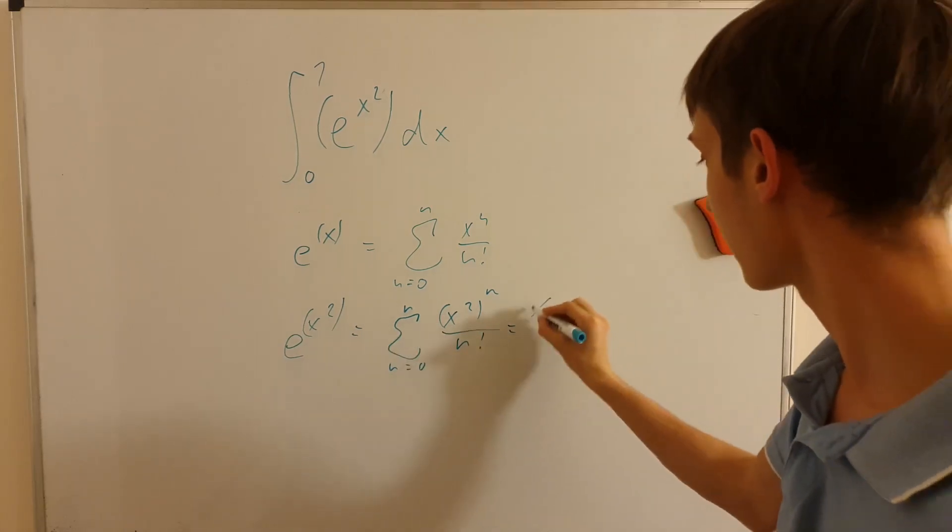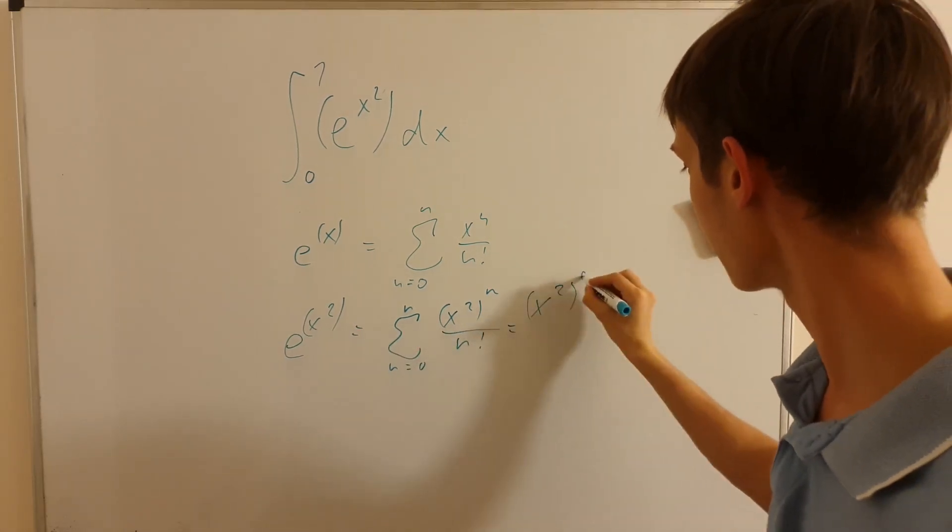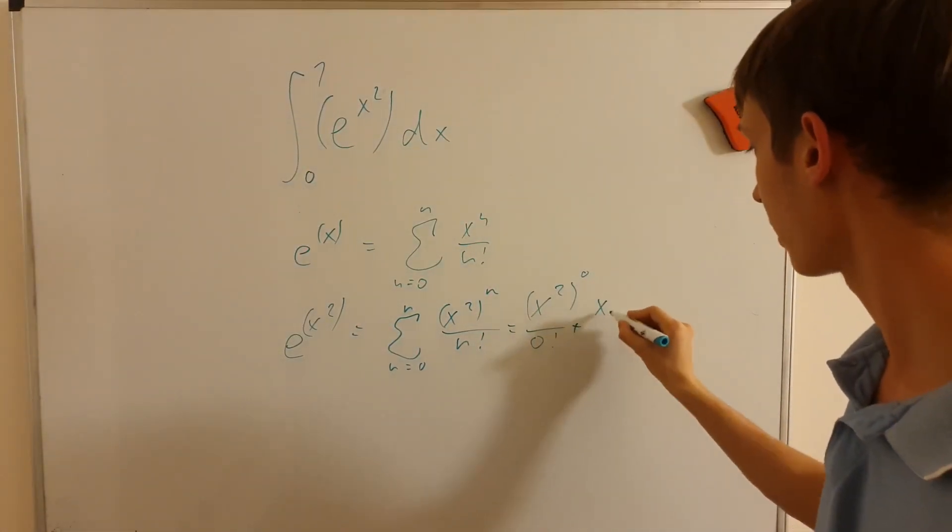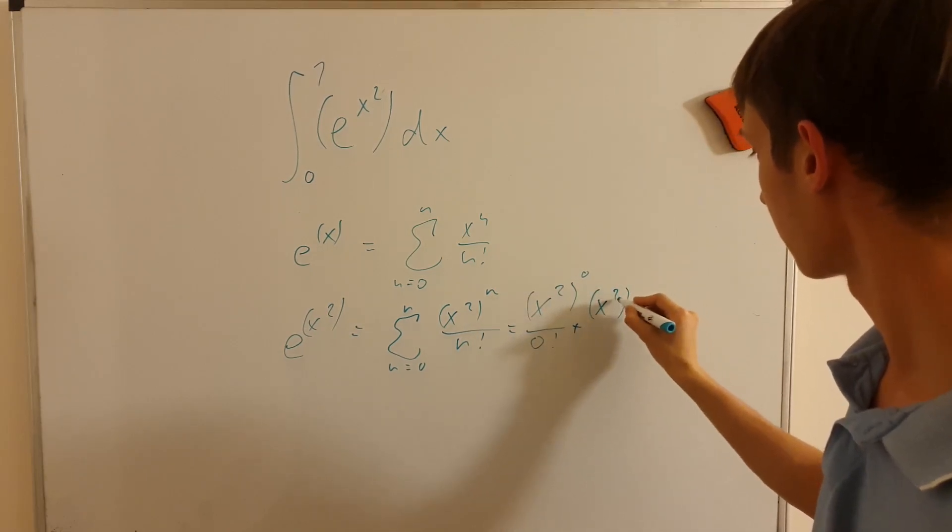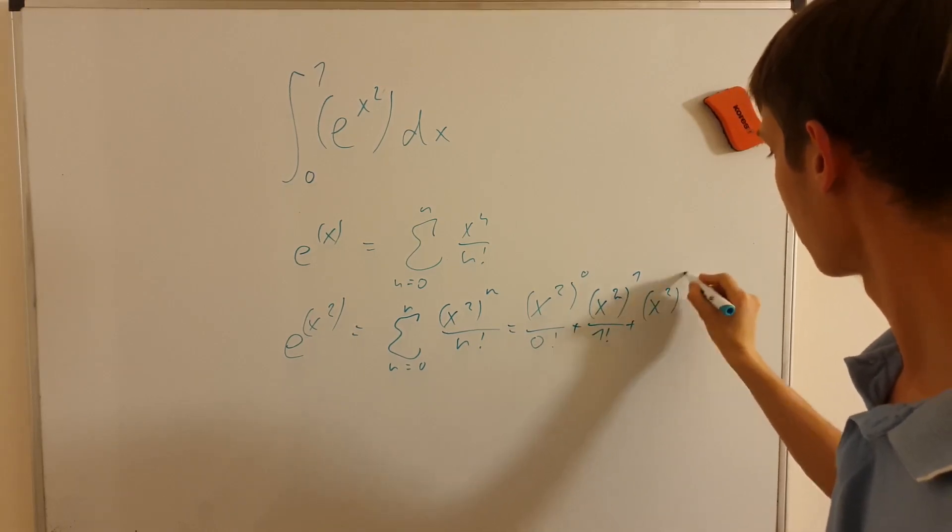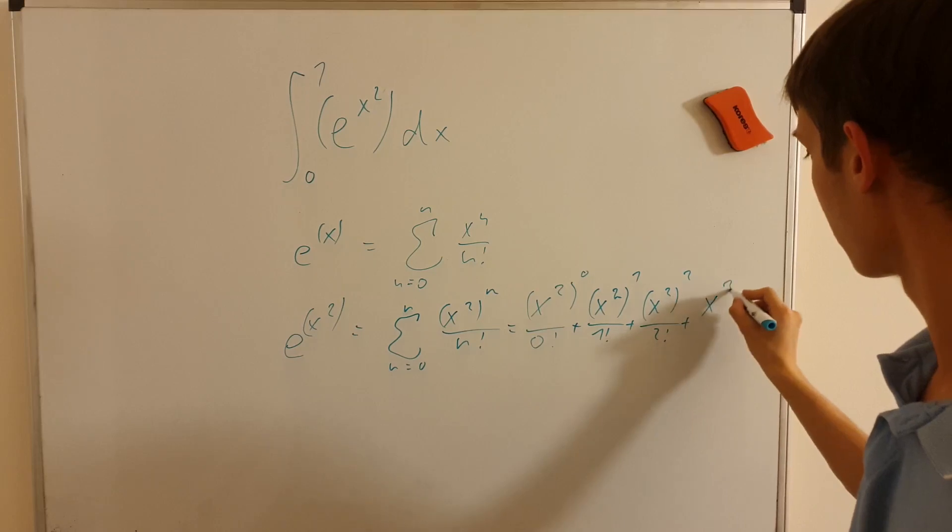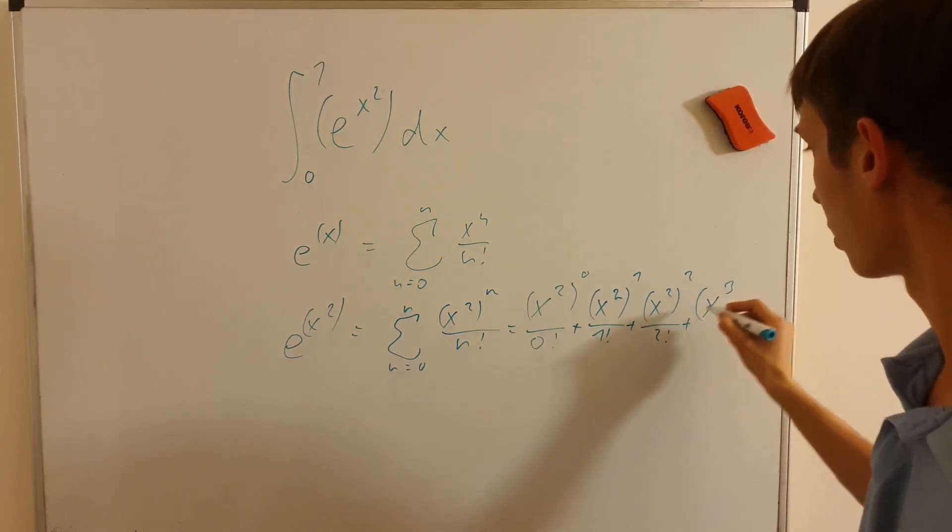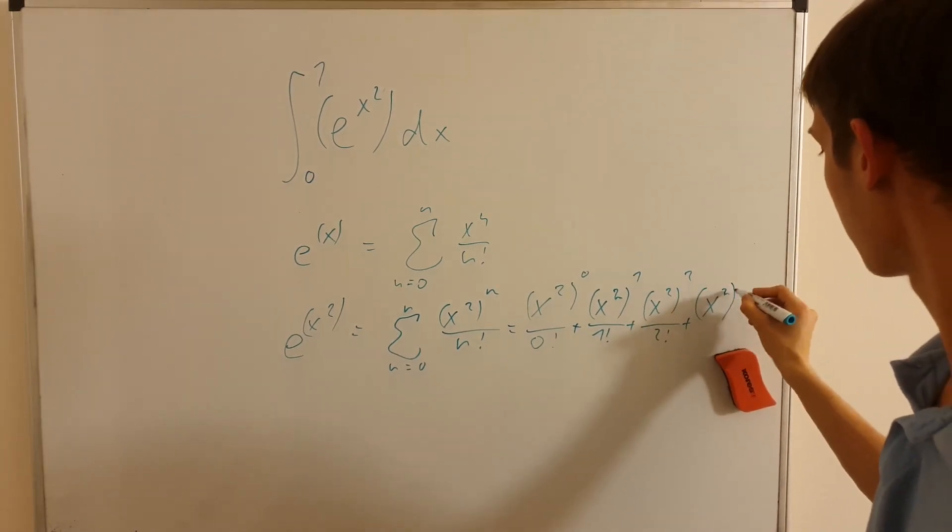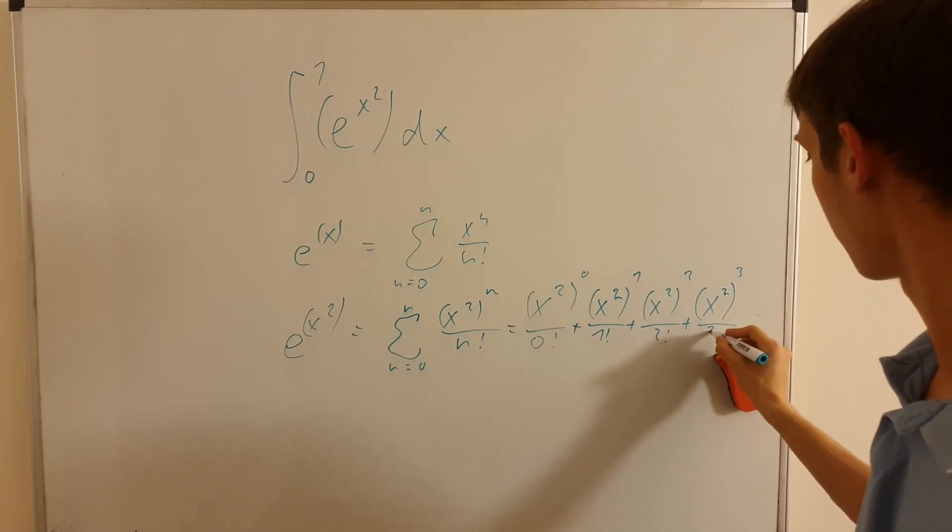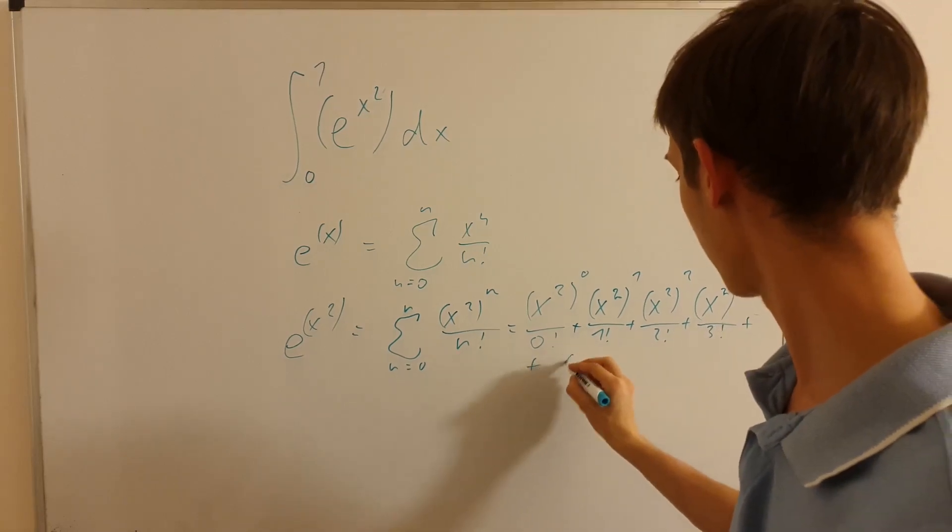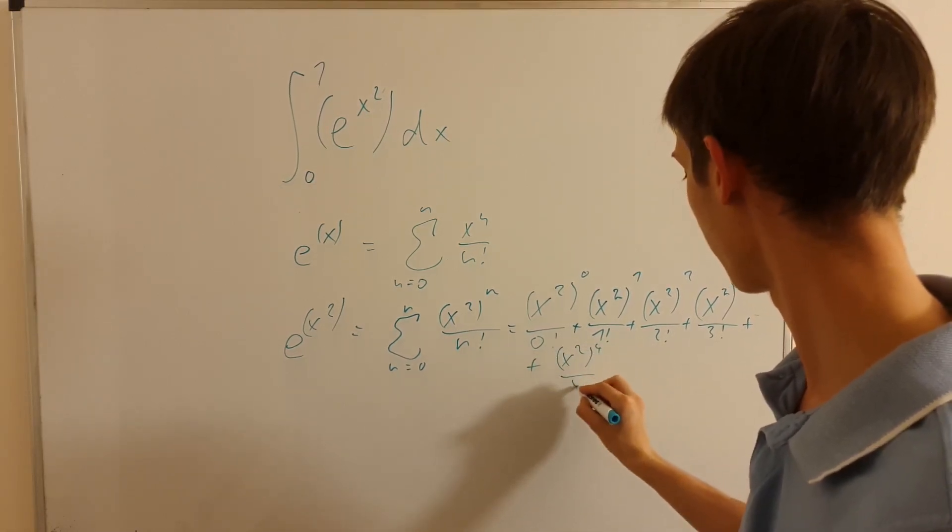Well, it will start with x to the second, to the second, to the zero, over zero factorial. So the first, again, will be one, then plus x to the second, to the first, plus x to the second, to the second, over two factorial, plus x to the third, over three factorial, plus x to the second, to the fourth, over four factorial.